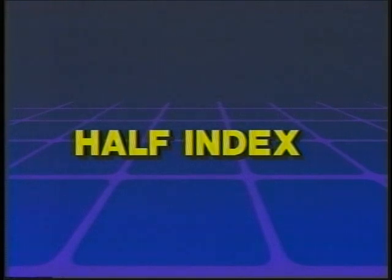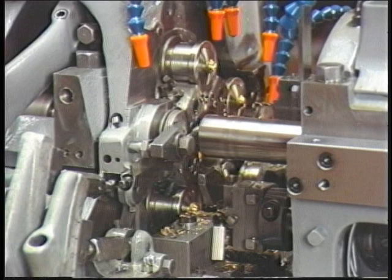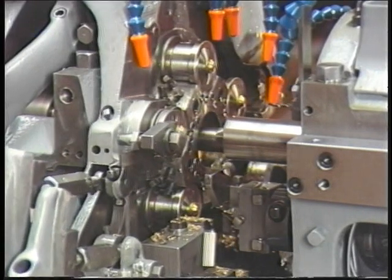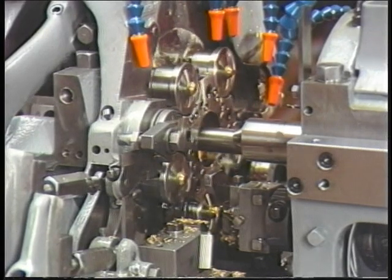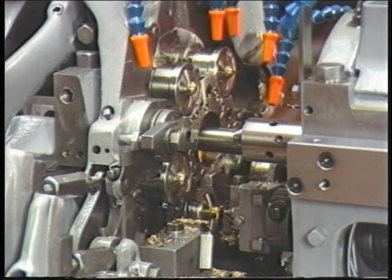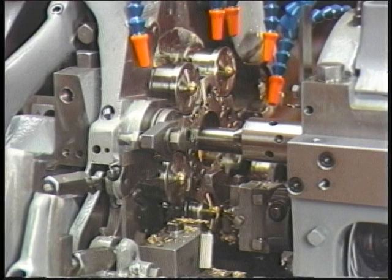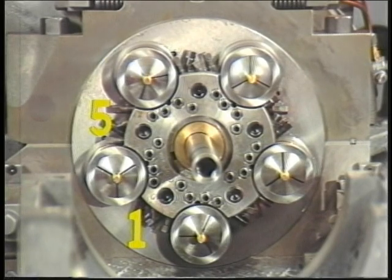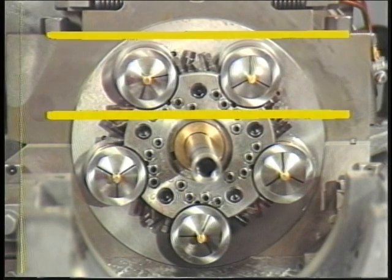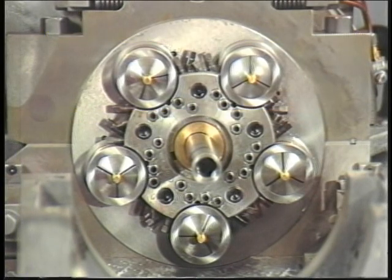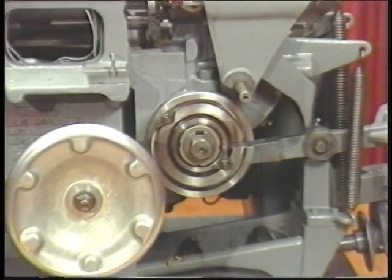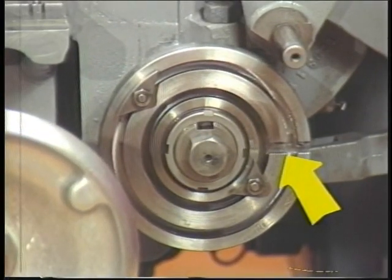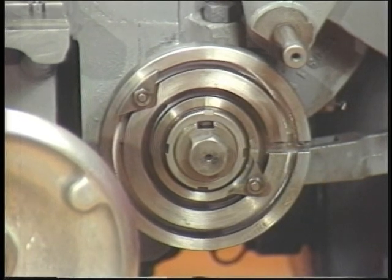Half index. Before being tooled, the machine must be moved to half index. When the machine is on half index, the tools are withdrawn as far as possible and it is easier to remove and reinstall the tools and/or tool holders. Half index is a point on the non-working portion of the machine cycle where all the tools are at the low point of their cams and the revolving head is halfway between one working position and another. An easy way to determine half index is to note when the top two work spindles are horizontal and parallel to each other. Another way is to look at the slot on the bearing spindle opening and closing cam — when the slot is at three o'clock, the machine is on half index.